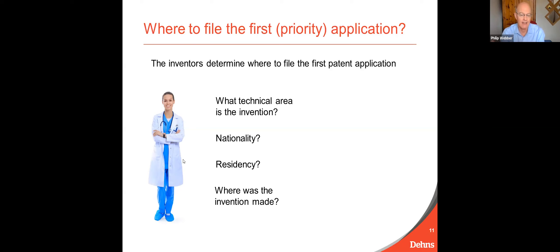For example, if you are a Greek national, all of your inventions must be filed in first patent applications at the Greek patent office. Under UK law, if you are a resident in the UK and your invention relates to national security or public safety, you must file your first patent application at the UK patent office. If your invention was made in the United States, then your first patent application must be filed at the United States patent office. There are quite severe penalties — fines and imprisonment for either the inventors or even the patent attorneys — if they file in countries where they were not allowed to.